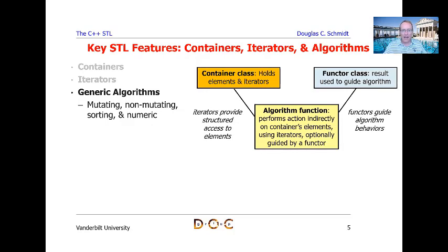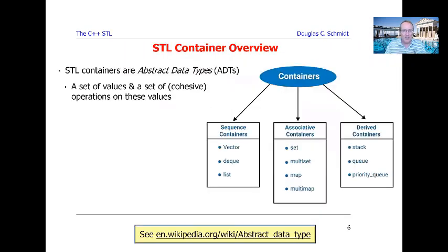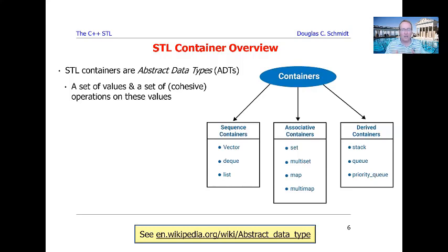So that's the big picture view, and now we're going to start diving down into containers. A container is essentially an instance or a variant of a so-called abstract data type. An abstract data type is an abstraction that contains a set of values or elements and a set of cohesive operations on these values.